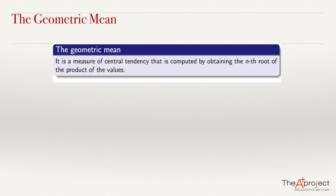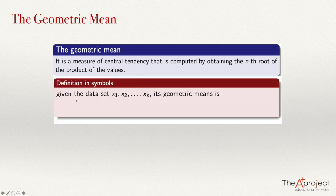In the present video, I explain a measure of central tendency called the geometric mean. If we have several values, the geometric mean is a measure of central tendency that is computed by obtaining the nth root of the product of the values. In symbols, given the data set x1, x2 to xn, its geometric mean is the nth root of the product x1 times x2 times x3 until the last one.